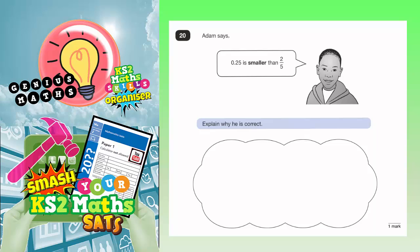Question 20. Adam says 0.25 is smaller than two-fifths. Explain why he's correct.